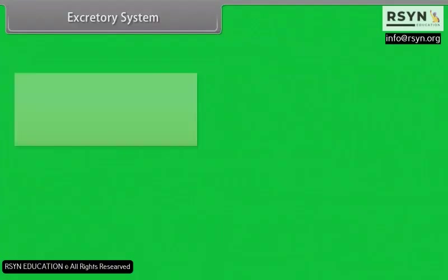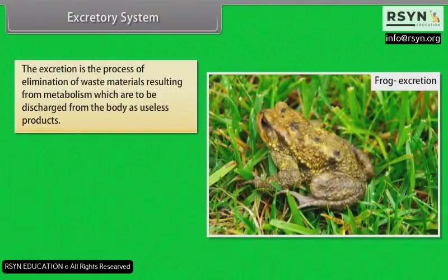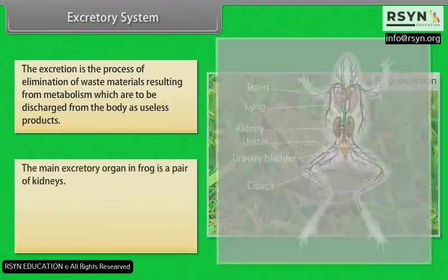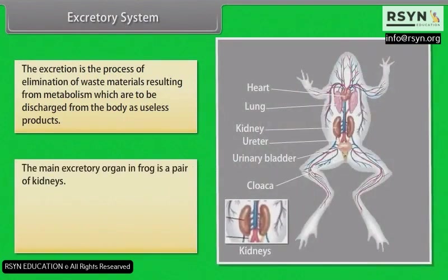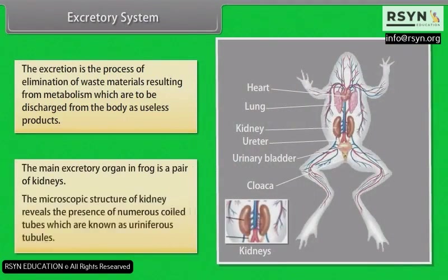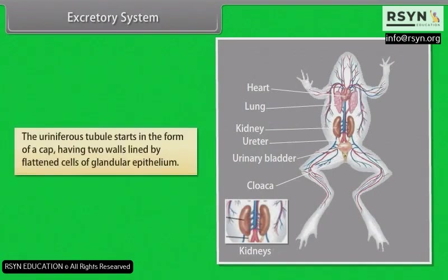Excretory System: Excretion is the process of elimination of waste materials resulting from metabolism, which are discharged from the body as useless products. The main excretory organ in frog is a pair of kidneys. The microscopic structure of the kidney reveals numerous coiled tubes known as uriniferous tubules, which start in the form of a cap having two walls lined by flattened cells of glandular epithelium.